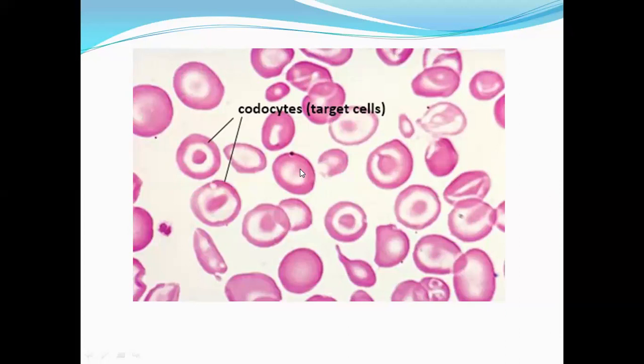Thalassemia major blood picture is microcytic hypochromic. This goes under hemolytic anemia. Hemolytic anemia RBC morphology is typically normocytic normochromic, but especially thalassemia is microcytic hypochromic. They will ask what these cells are — the major type of abnormal cells you can see. Those are target cells.